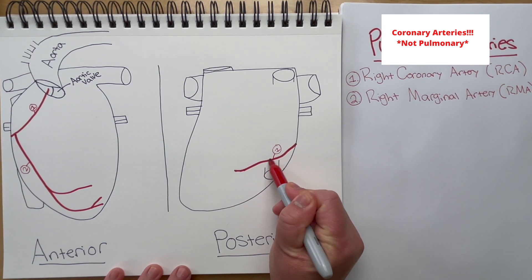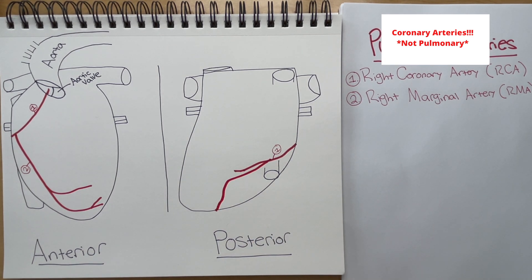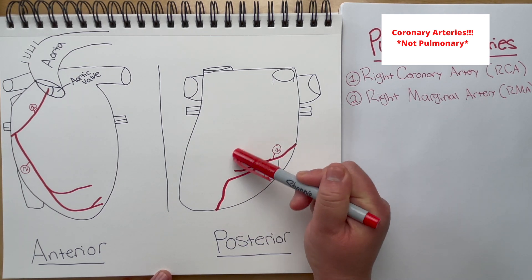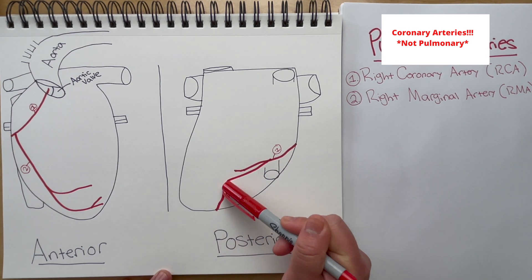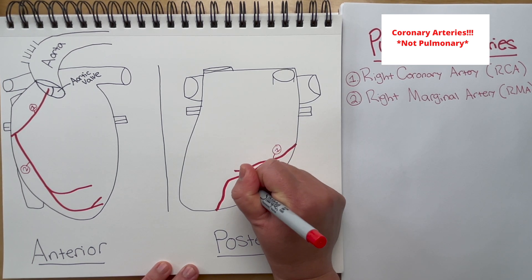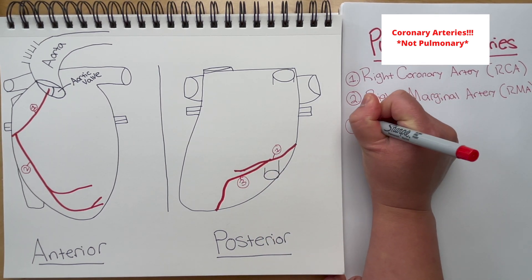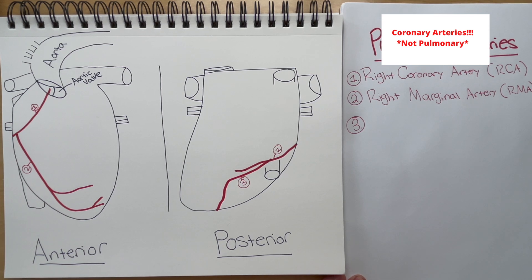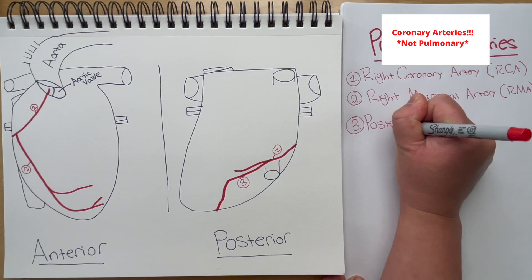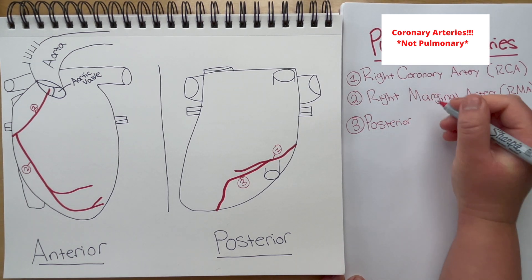Next we have the posterior descending artery, also called the posterior interventricular artery. It's called the interventricular artery because it goes through the interventricular septum, which separates the right and left ventricles. This branch comes right off of the posterior side of the right coronary artery. This artery supplies blood to the interventricular septum as well as the lower portions of the apex of the heart and the right and left ventricles.